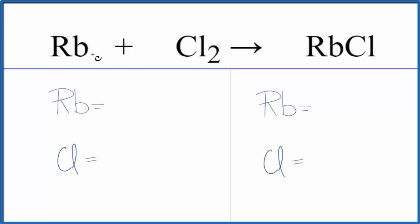For Rb there's nothing written after it. We assume there to be a one there, two chlorine atoms. Over here again one rubidium and then one chlorine.